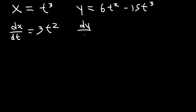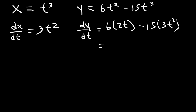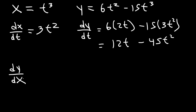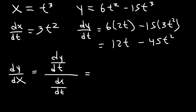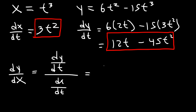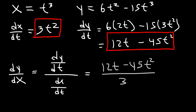Now let's move on to dy/dt. The derivative of t squared is 2t, and the derivative of t to the third is 3t squared. So this is going to be 6 times 2, which is 12, and 15 times 3, that's 45. So dy/dt is 12t minus 45t squared.